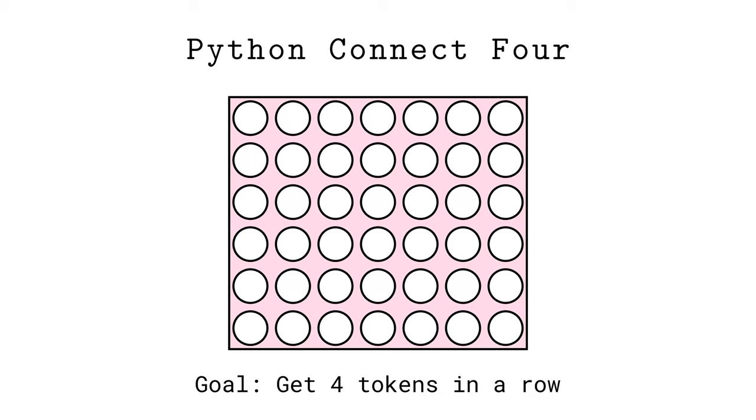Connect 4 was a favorite game of mine when I was young. Players take turns dropping tokens into one of the columns where they fall into place. The goal is to get four of your tokens in a row, either vertically, diagonally, or horizontally, and preventing your opponent from doing the same.